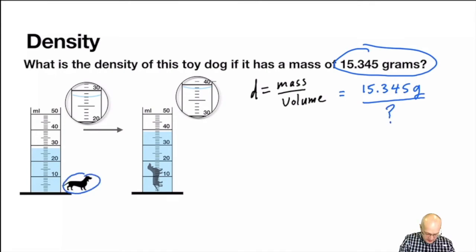Here's our little toy dog. Let's call him Frank. Frank is outside the graduated cylinder. So we have to get the initial volume and the final volume. V object equals VF minus VI.